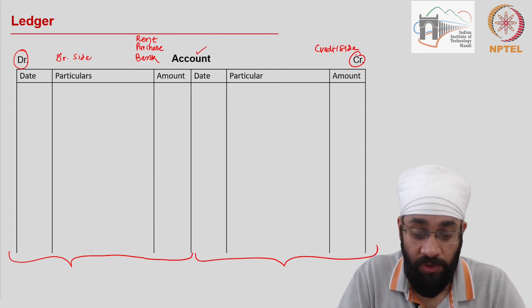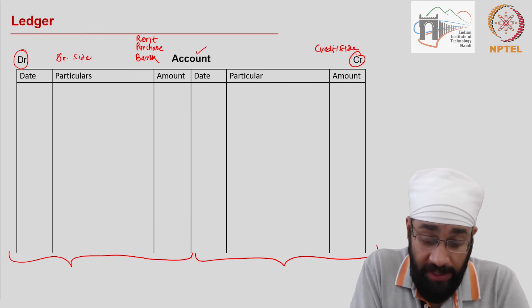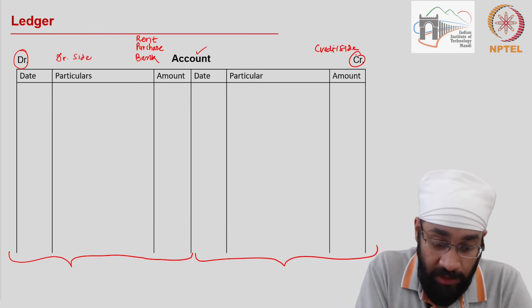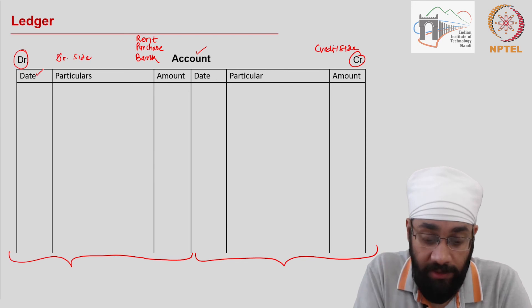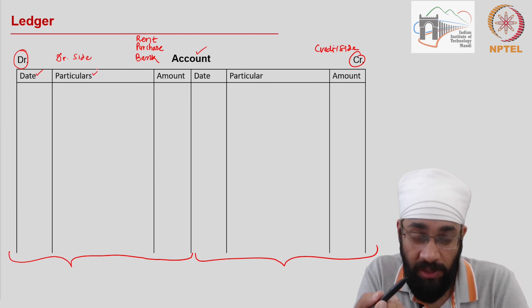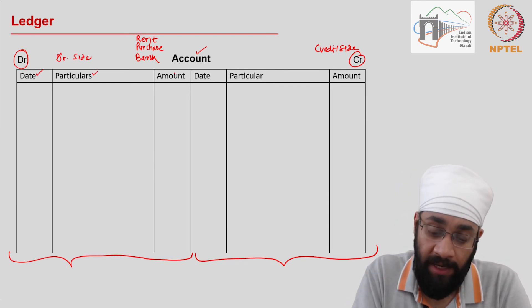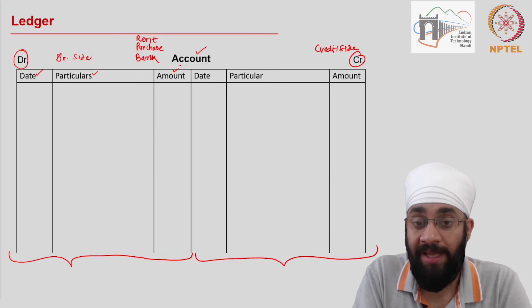So in this account on one side you have the column for date, particulars which means details, and then an amount to be written and same three columns repeated on the other side.